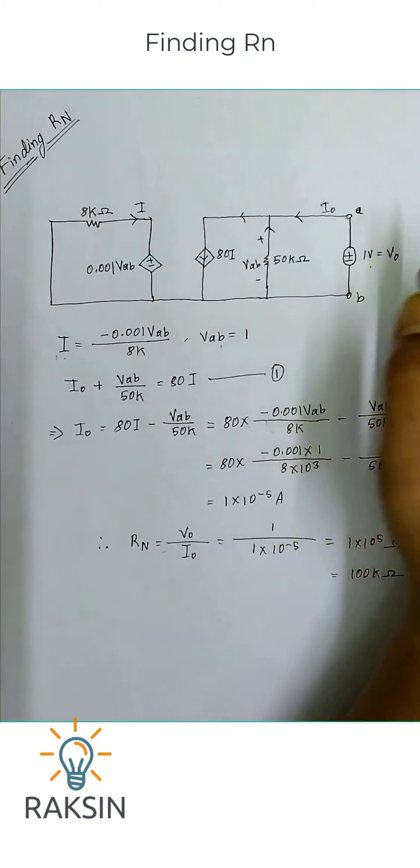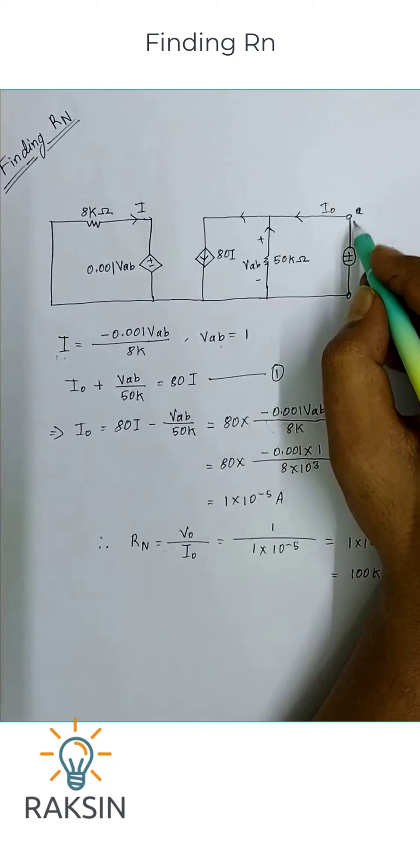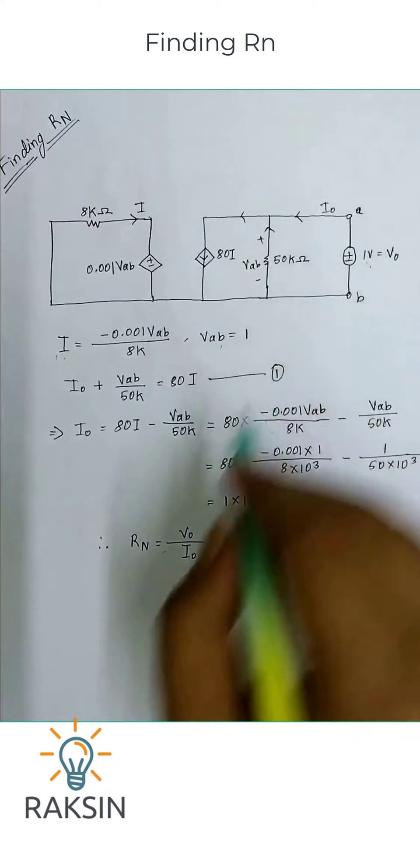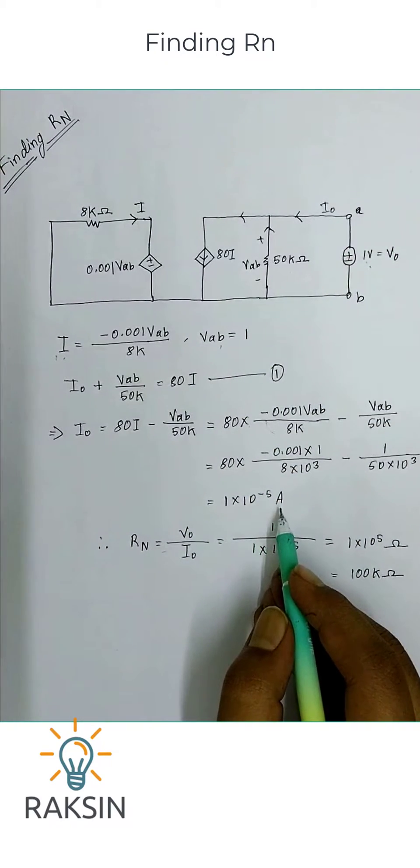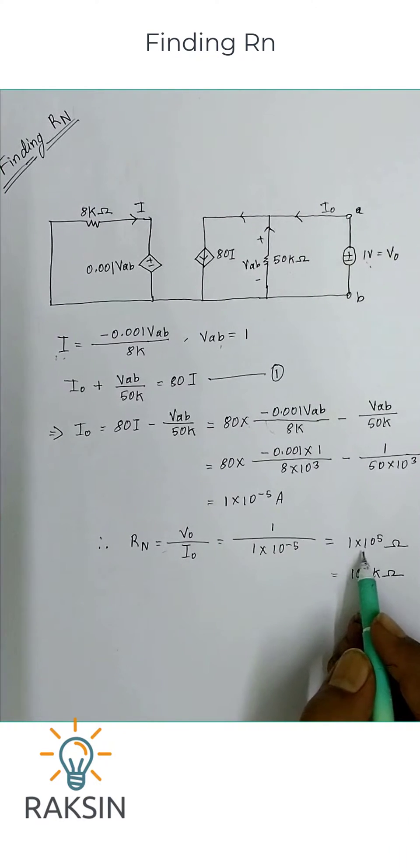Now we know the voltage across this line is 1 volt and the current I_not is 1 times 10 to the power minus 5 ampere. So Rn will be 1 times 10 to the power 5 ohms, or 100 kilo ohms.